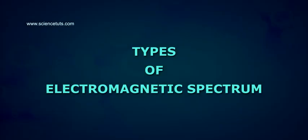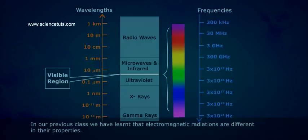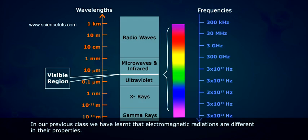Types of Electromagnetic Spectrum. In our previous class, we have learned that electromagnetic radiations are different in their properties.